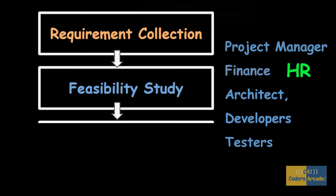Then there is the HR team. The HR team will assess how much manpower is available and whether that is sufficient to carry on with the project, or if it is a bigger project and more manpower is needed. Then there are Architects — a Developer Architect and a Tester Architect. These architects give their rationale from a technology point of view. The Developer Architect will ask: do we have the right developers? For example, if the project needs Java developers, do we have them?